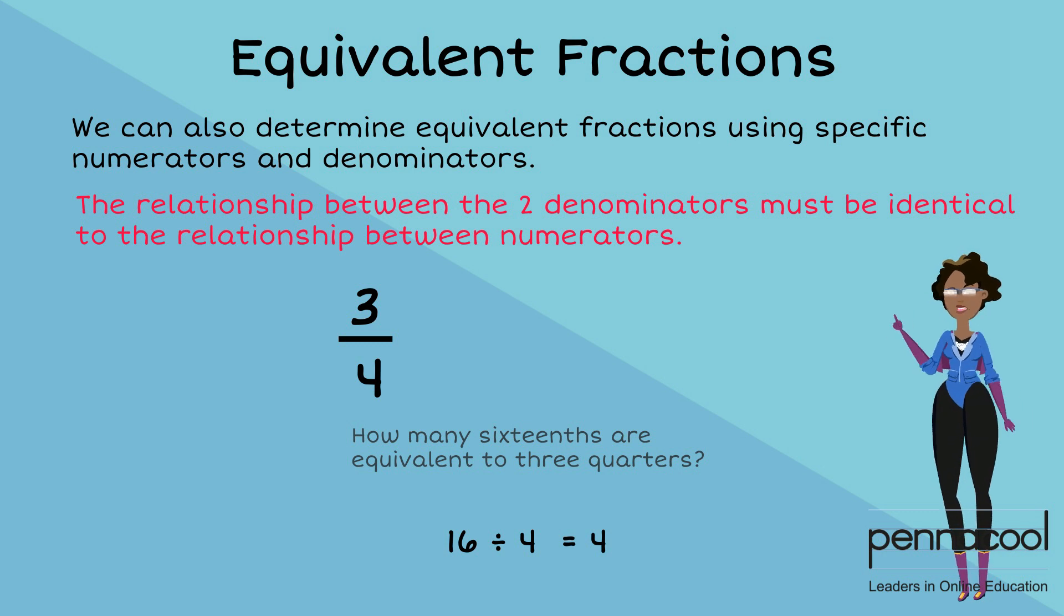This means the two numerators are related by the multiple of 4. Hence, we multiply the numerator 3 by 4 and get a value of 12. 3 quarters is equivalent to 12 16ths.